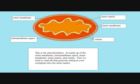This is the mitochondria, where oxidative phosphorylation takes place and provides the energy for phosphorylating ADP into ATP. The mitochondrion is composed of five main parts: the outer membrane, the intermembrane space, the inner membrane, the inner matrix, and the cristae.